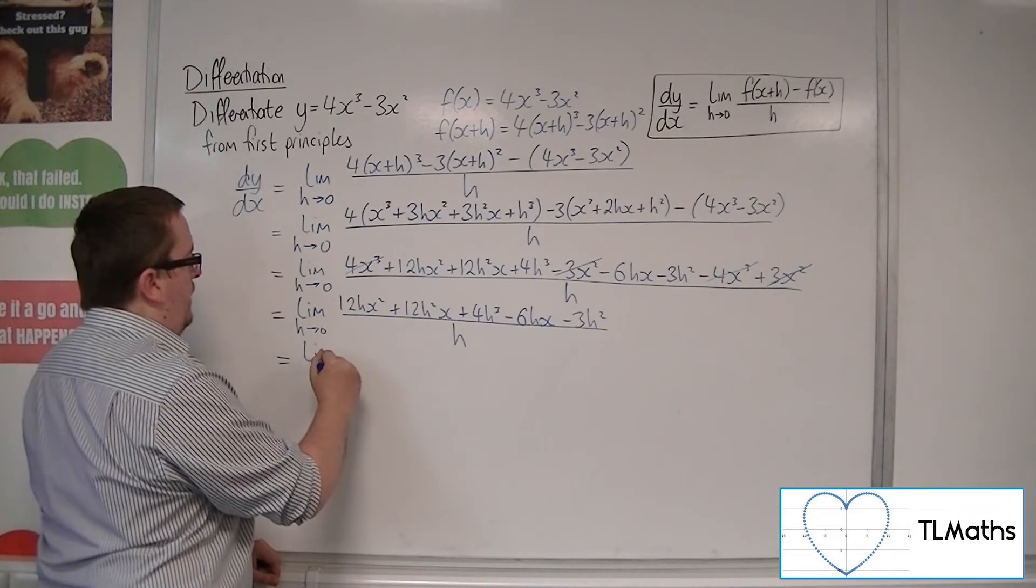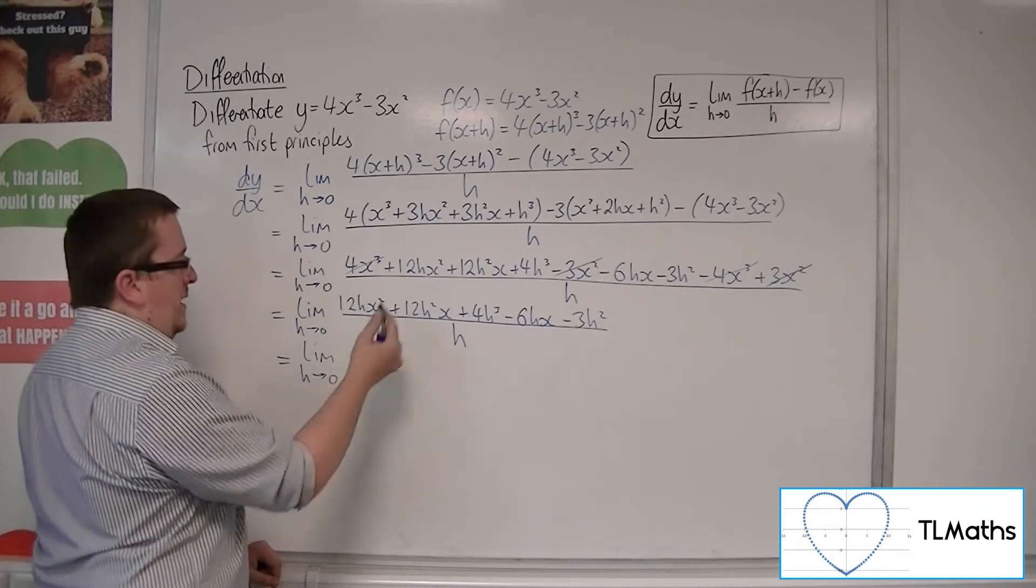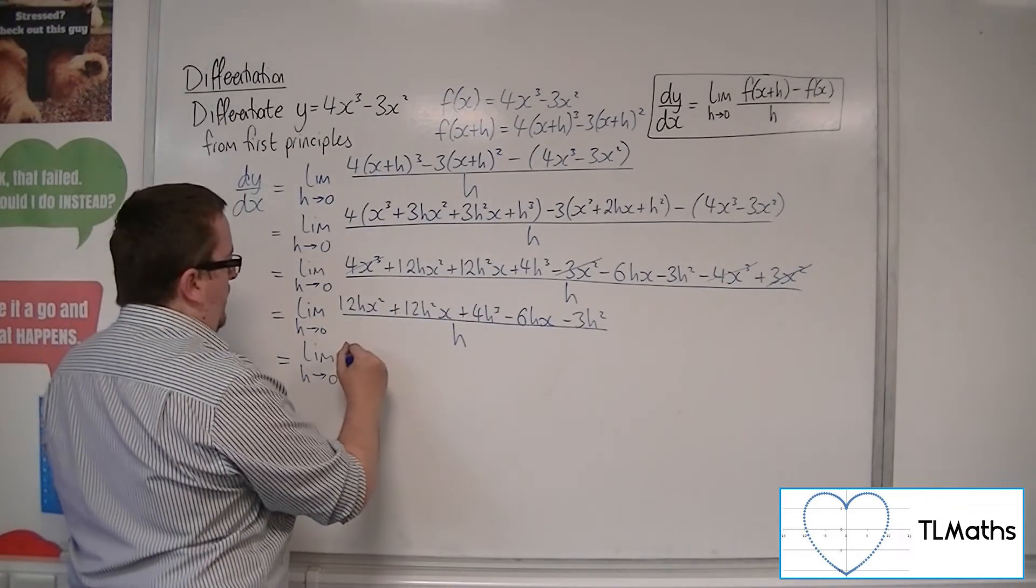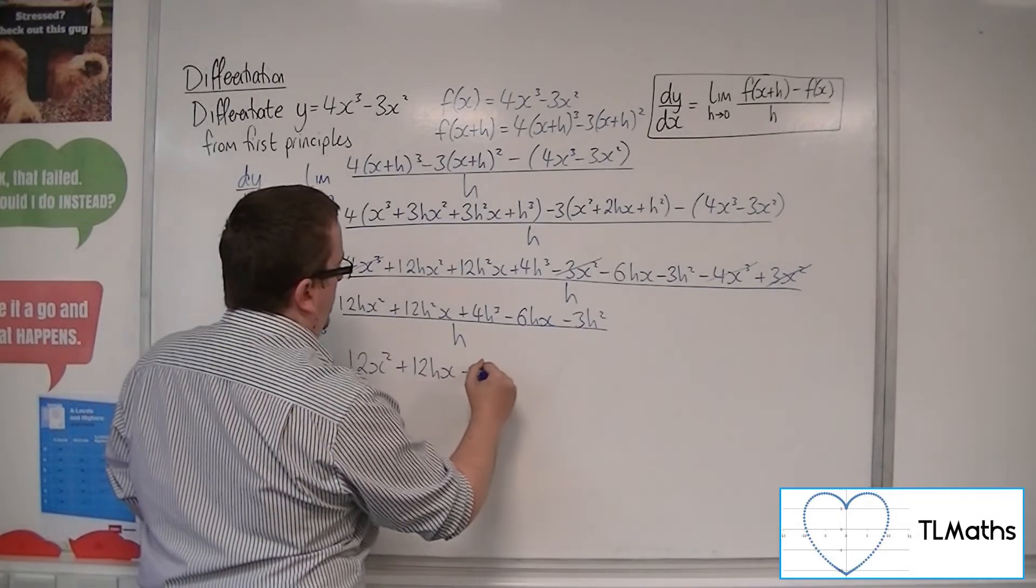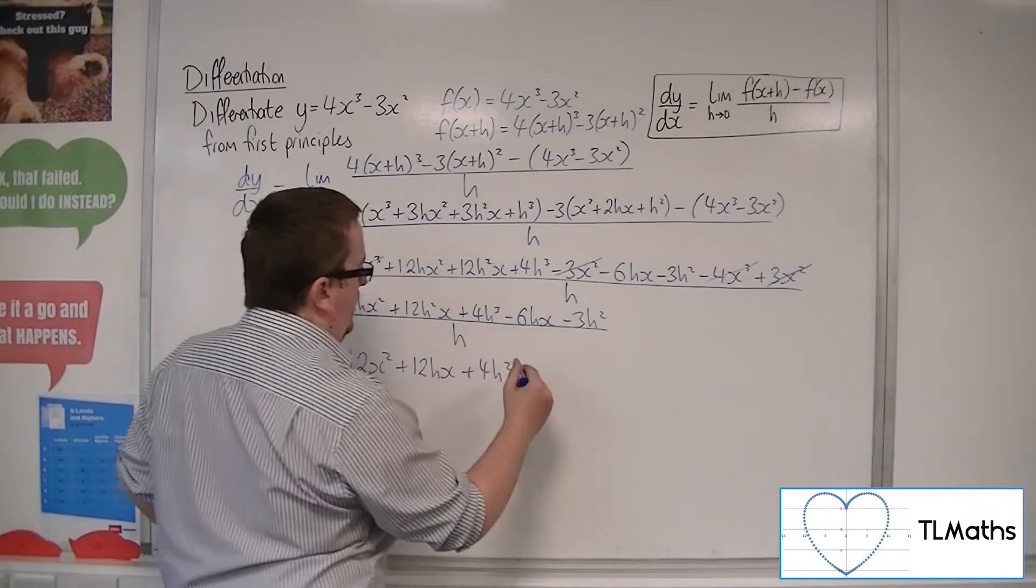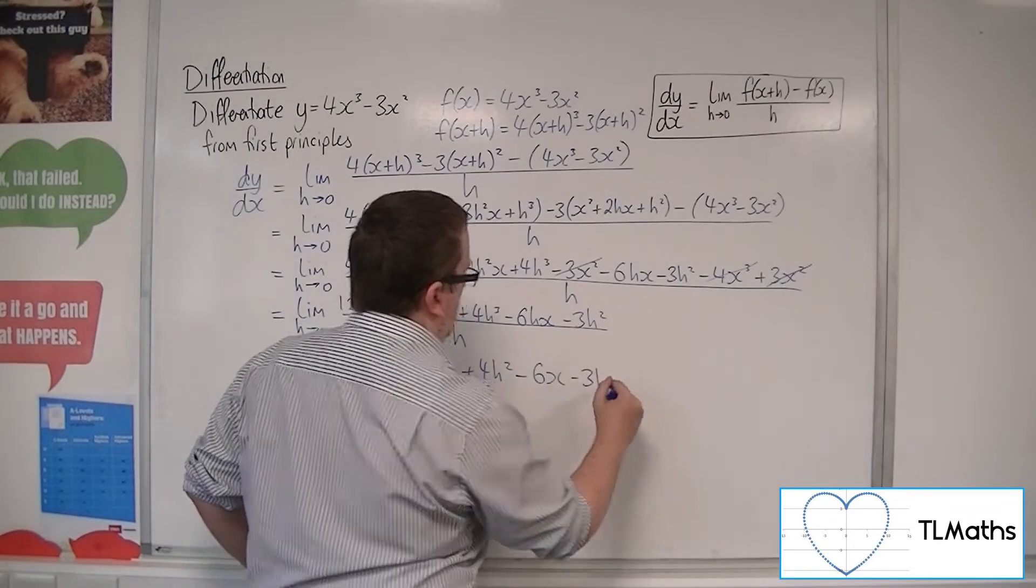Now we've got a common factor of h in each term. So we can cancel the h's. So we've got 12x squared plus 12hx plus 4h squared minus 6x minus 3h.